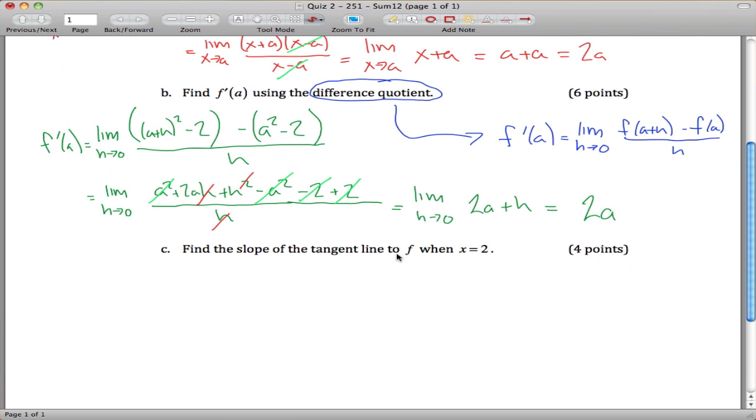Find the slope of the tangent line to f when x equals 2. This is kind of testing if you understand this conceptually. f prime of a gives me the slope of the tangent line to f. Maybe f prime of a is slope of tangent line to f when x equals a. So what I want is f prime of 2. f prime of a, we figured out was equal to 2a, so f prime of 2 is going to be 2 times 2, which is 4.